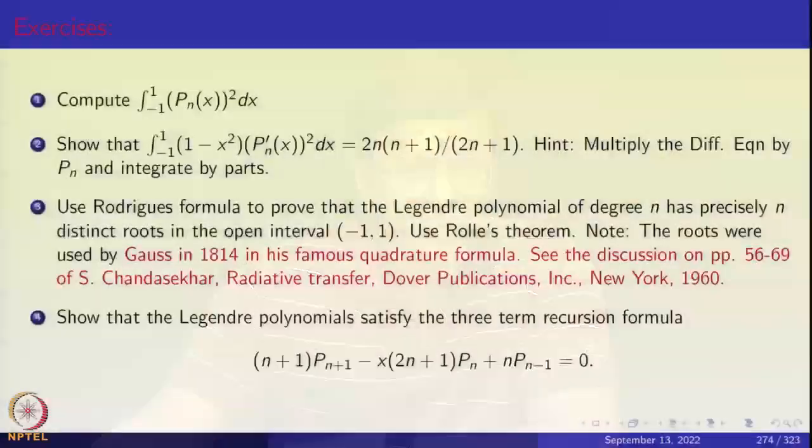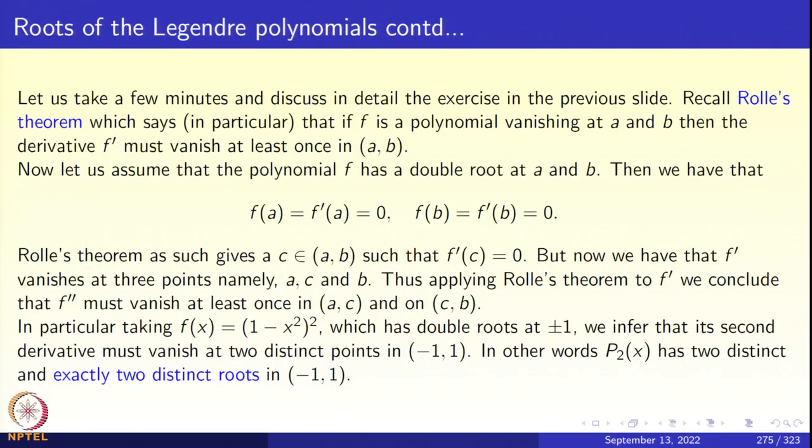A discussion of Gaussian quadrature can be found in the book of S. Chandrasekhar, Radiative Heat Transfer, Dover Publications, New York. Now let us get to the proof of this important result. We need to use Rolle's theorem repeatedly.